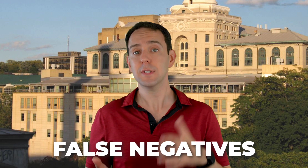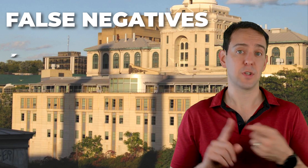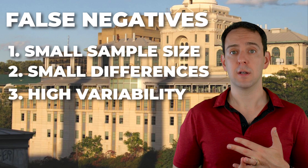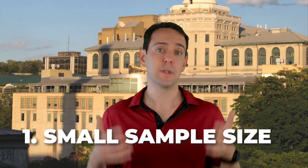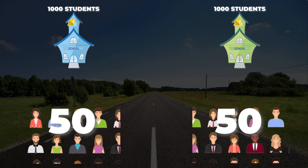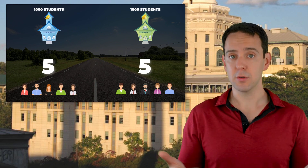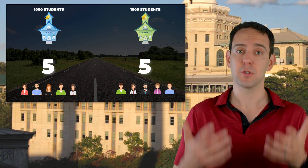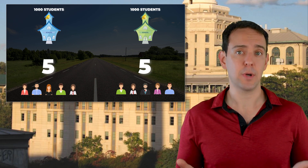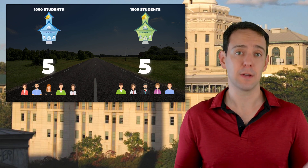For false negatives, it's a bit more complex. There are three main reasons why we might see a false negative: small sample sizes, small differences across our populations, and high variability in the data. Of those, the biggest problem is small sample sizes. Imagine if instead of measuring the heights of 50 students per school, I only measured five per school. Drawing a conclusion based on just five students per school is ill-advised. If you don't have enough data in your sample, it makes it really hard to draw meaningful conclusions.